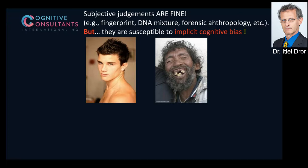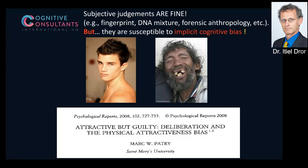In the legal domain it gets worse. We take criminal records — the same exact evidence — and attach a picture, sometimes of an attractive person and sometimes a less attractive one. Professional judges, prosecutors, and lawyers tend to find the attractive person innocent and the less attractive person guilty. Even if the evidence is overwhelming and both are found guilty, the attractive person receives fewer years in jail. This has been replicated time and again — it's called attractiveness bias — and it's unintentional.